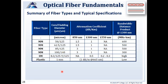This is a table showing the different fiber types, their core and cladding diameters, and their attenuation coefficient based on the wavelength being used.